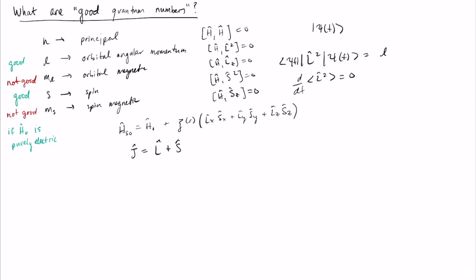This definition holds for every component: for example, j_z is equal to L_z plus S_z. Also, j-hat squared is equal to (L + S) squared, which expands to L squared plus S squared plus two times L·S. You notice that this is the same L·S that appears in the spin-orbit Hamiltonian, and so this is how we can see that the Hamiltonian will actually commute with j squared. It also turns out that it will commute with j_z.